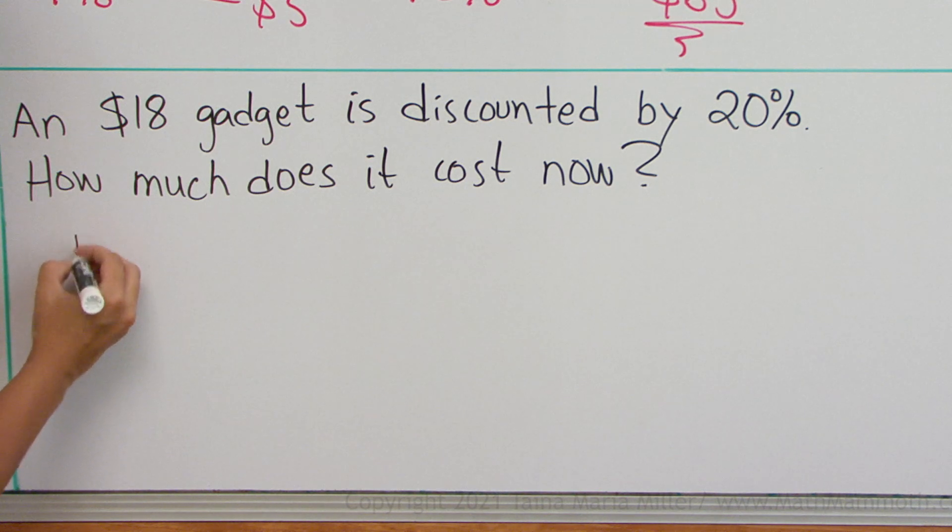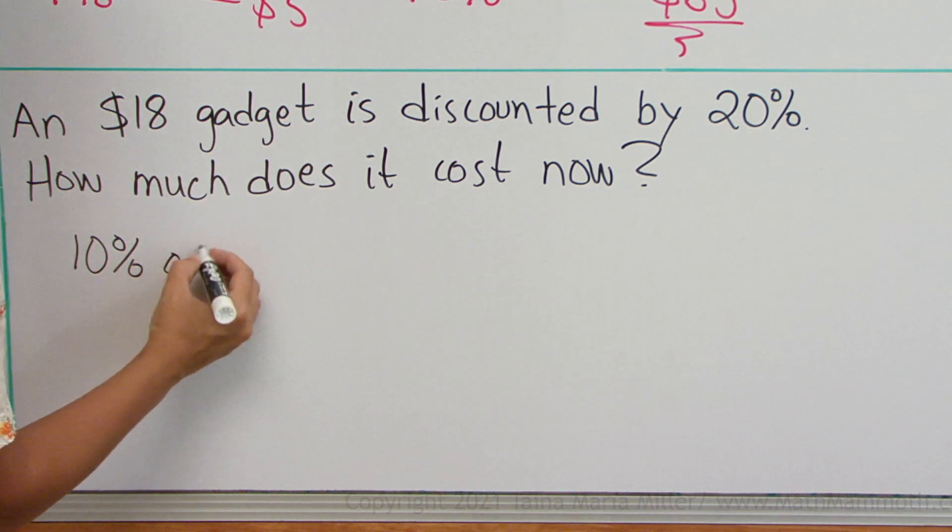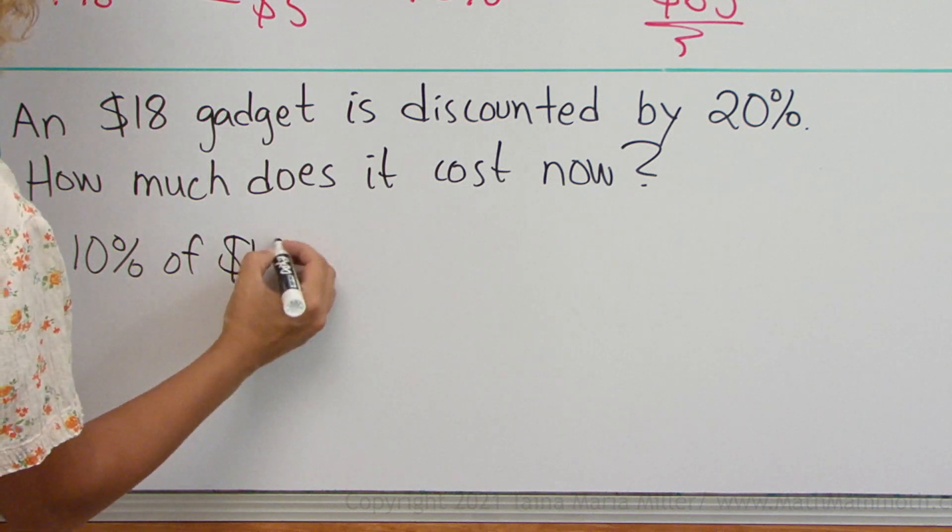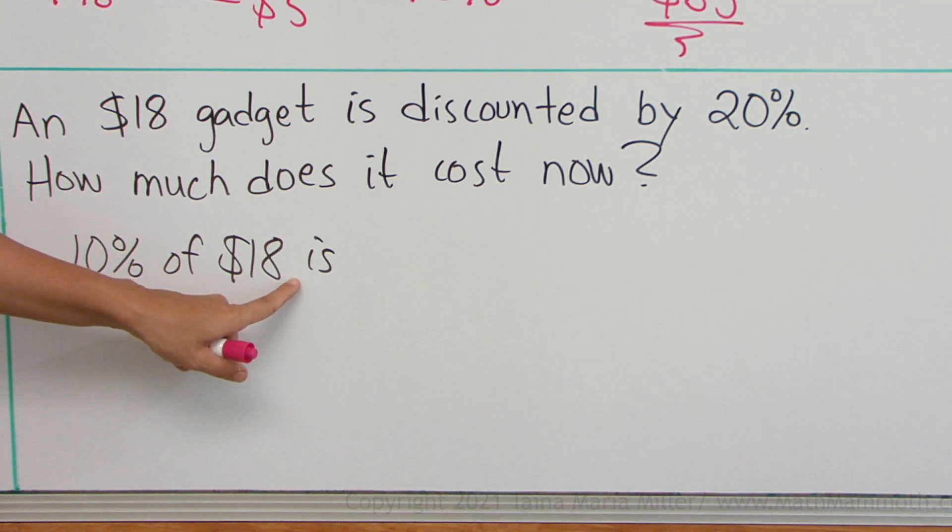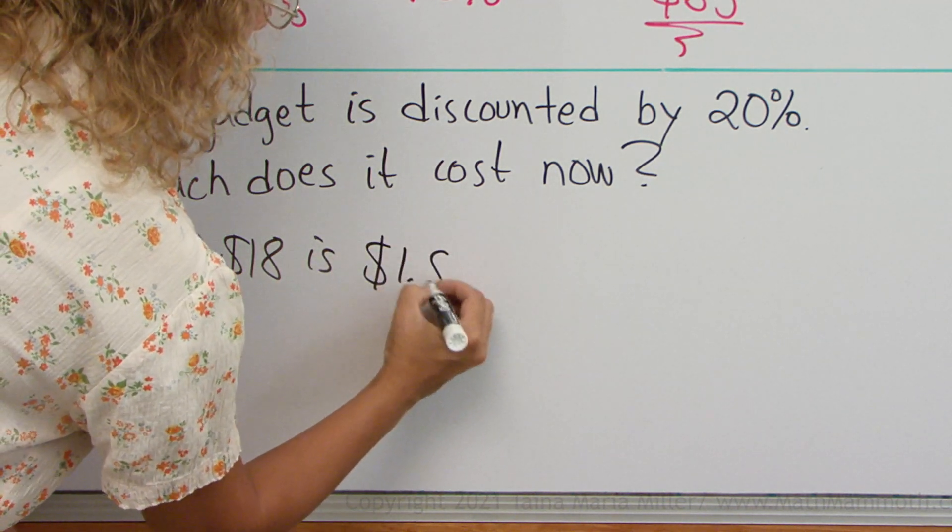Before that, let's do the 10%, right? 10% of our $18. Okay, 10% of that, divide by 10, it's a decimal point here, and move it, $1.80.